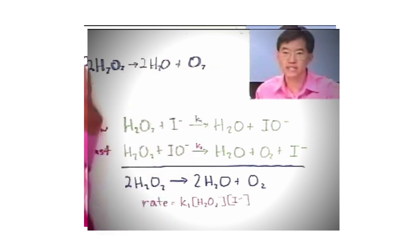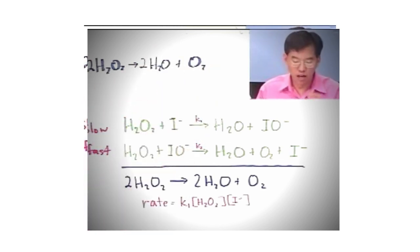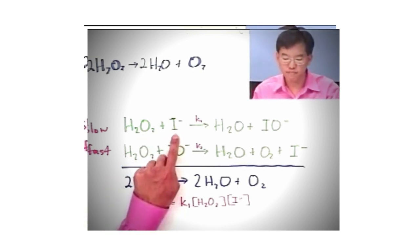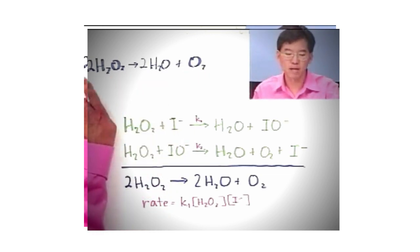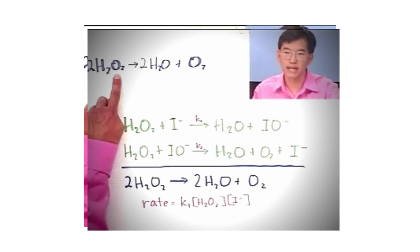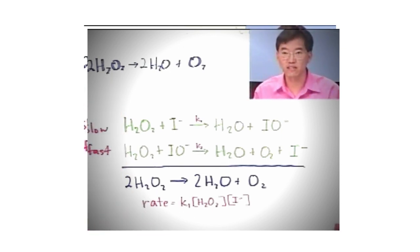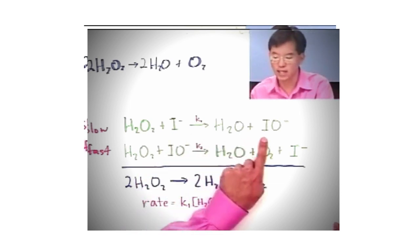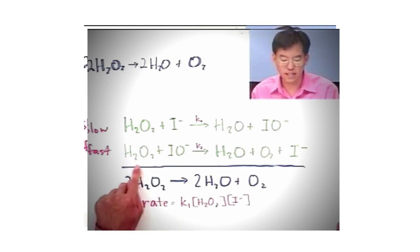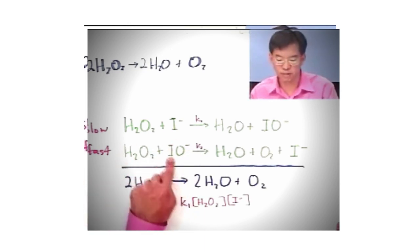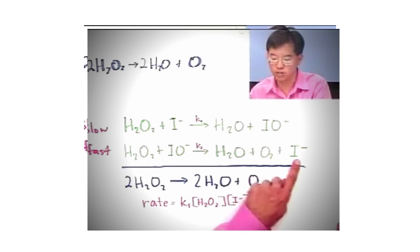So this is a slow reaction in the absence of catalysis, but we can make it go faster. And the way we can make it go faster is to throw in some iodide anion, I-. And now, instead of this reaction going in maybe a bimolecular reaction where two hydrogen peroxides have to crash into each other, there's an entirely different pathway that involves I- to form water and hypoiodite, and then the hydrogen peroxide reacts with hypoiodite to form water and O2 and I-.